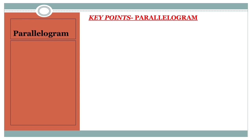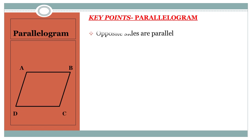Let me take a parallelogram and name it ABCD. First property: opposite sides are parallel. The opposite side pairs are AB & DC, and AD & BC. As per the property, AB is parallel to DC and AD is parallel to BC.